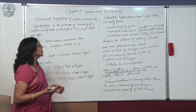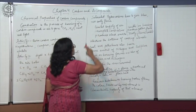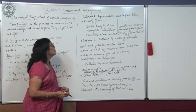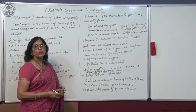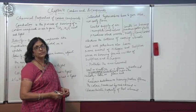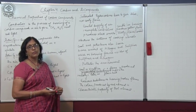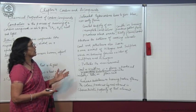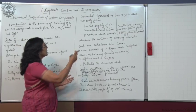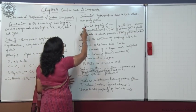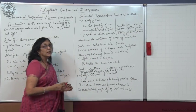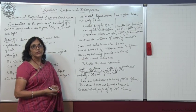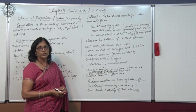Sooty means the black smoke which deposits on the surface of objects in the form of a black-coloured deposit. Saturated hydrocarbons burn in air to give a blue, non-sooty, non-smoky flame. Saturated compounds have only single bonds. However, if the supply of air is less, even saturated hydrocarbons will produce a yellow, sooty flame.